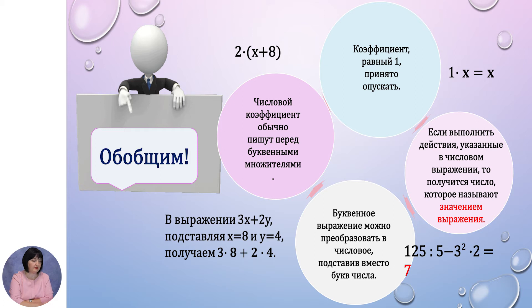Буквенное выражение можно преобразовать в числовое, подставив вместо букв числа. Например, дано буквенное выражение 3x плюс 2y. Предложено вместо x подставить число 8, вместо y число 4. Тогда, заменив буквы на эти числа, получаем числовое выражение.